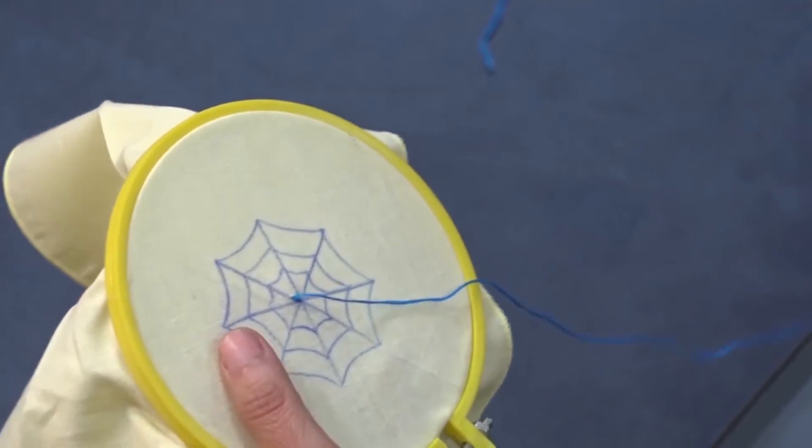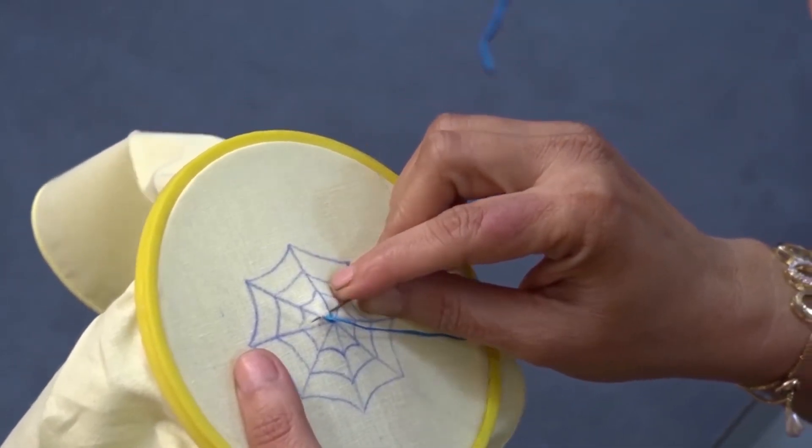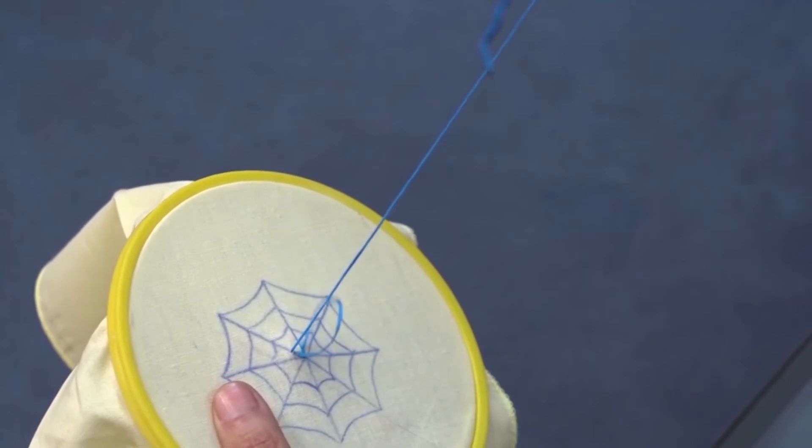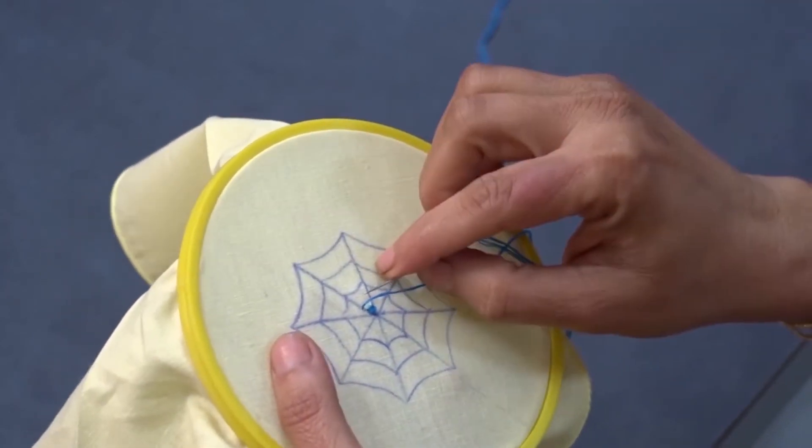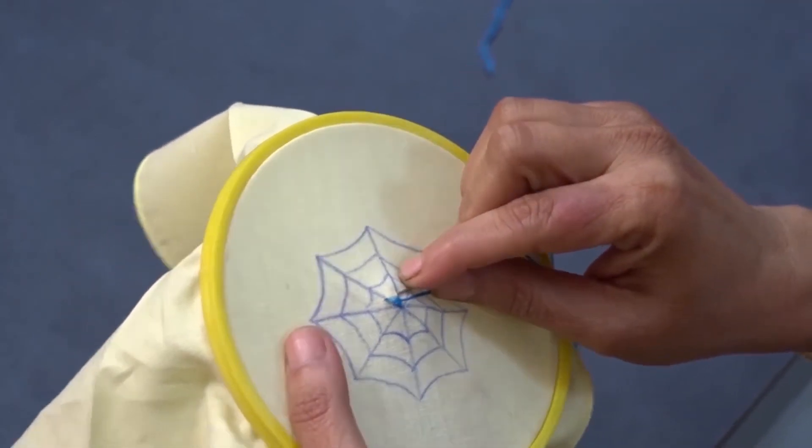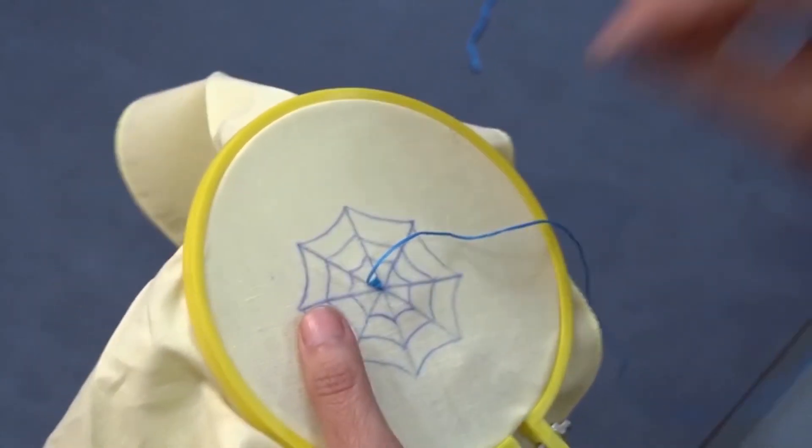Now pull the thread very gently. Carry out the next stitch in the same way. You can use two-color threads also to make your embroidery work look more beautiful.